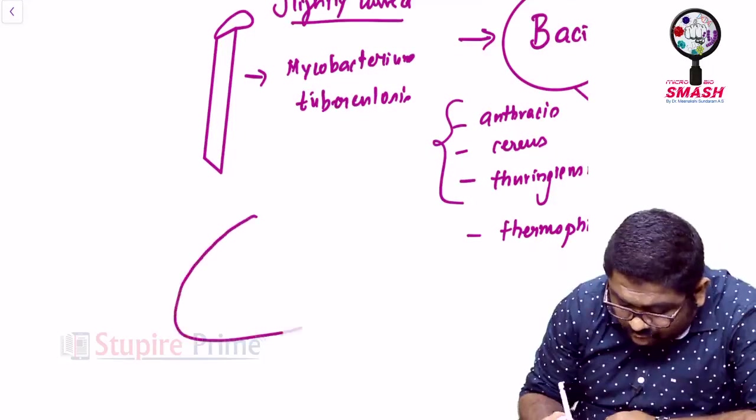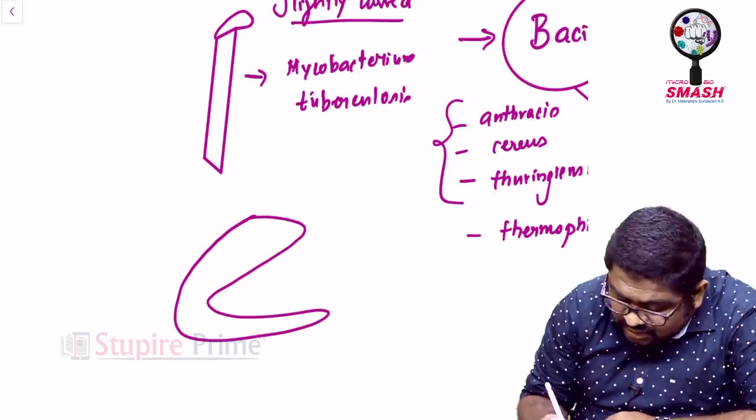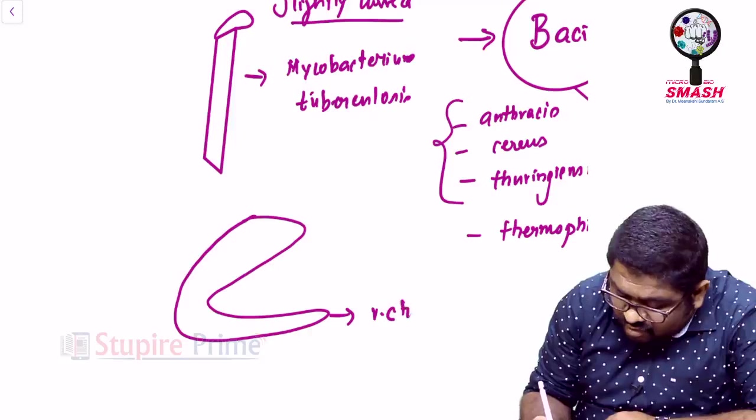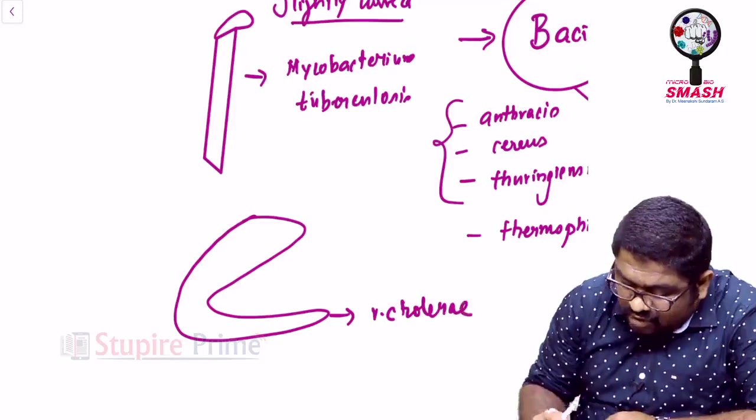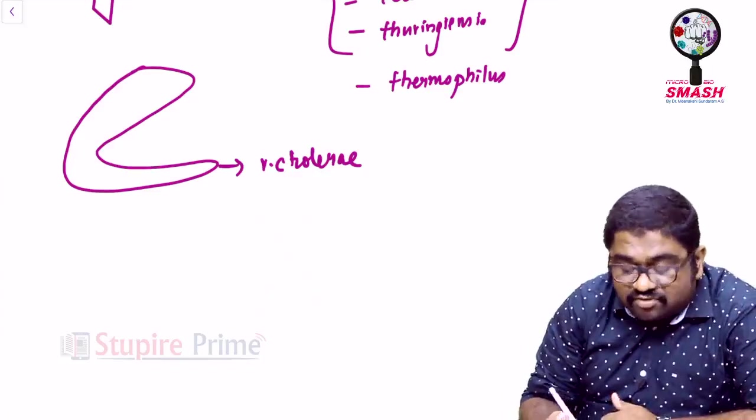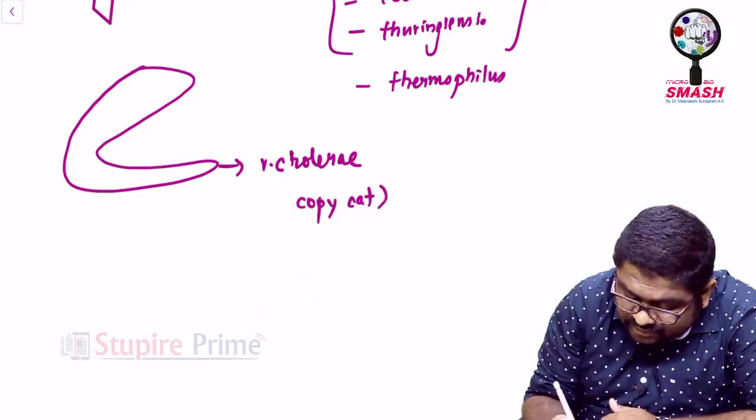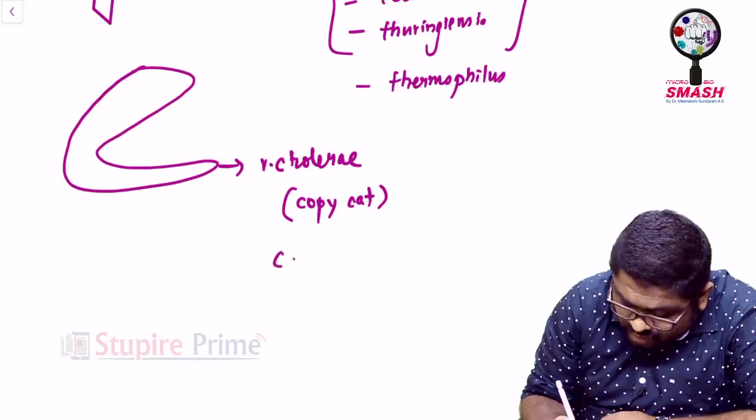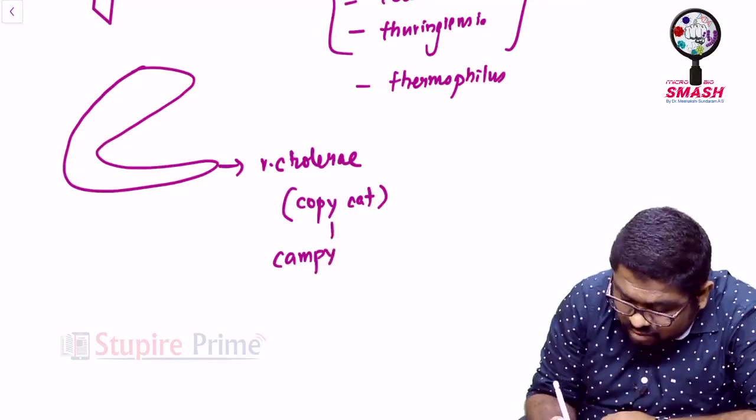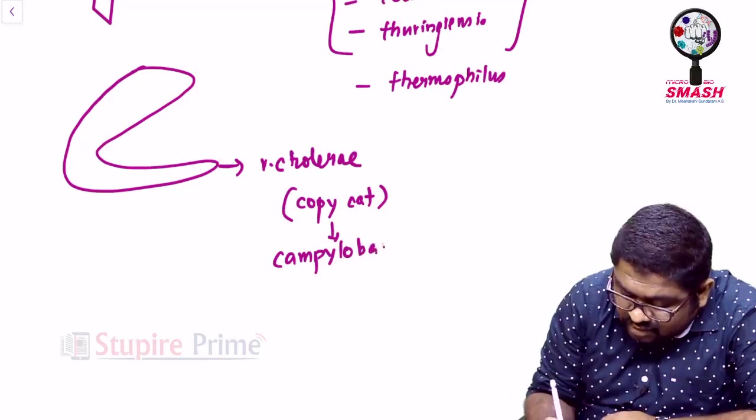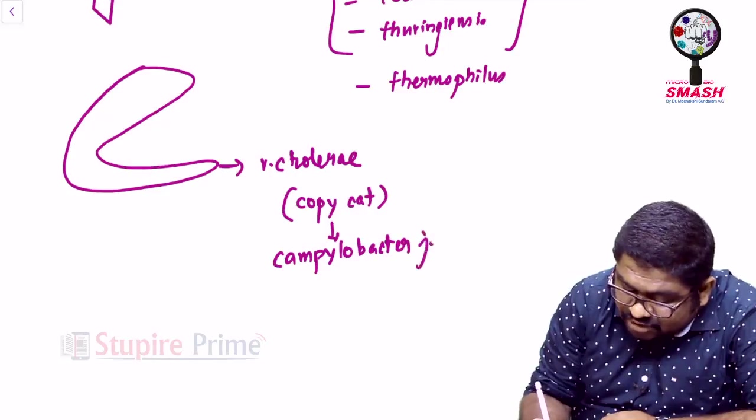If you think about a properly curved rod like this, it can be Vibrio cholerae.